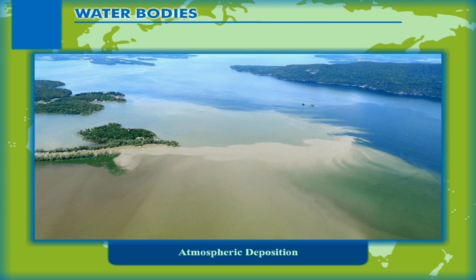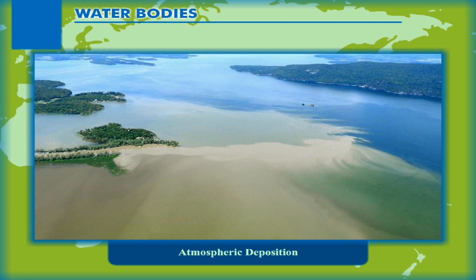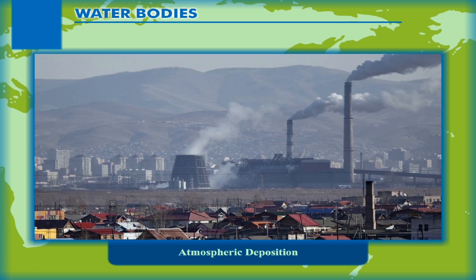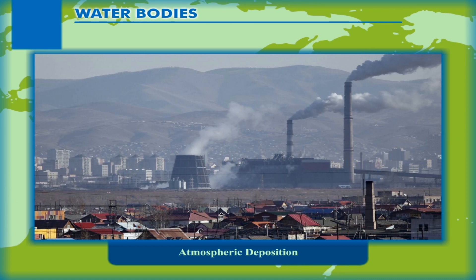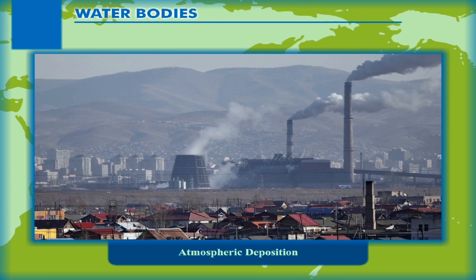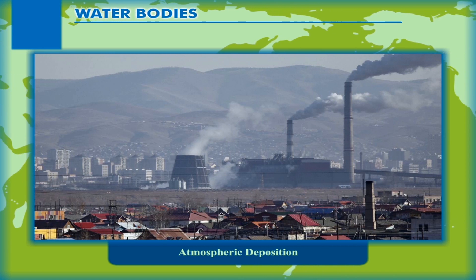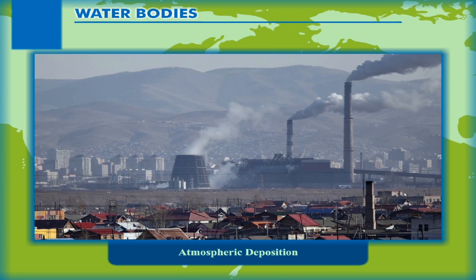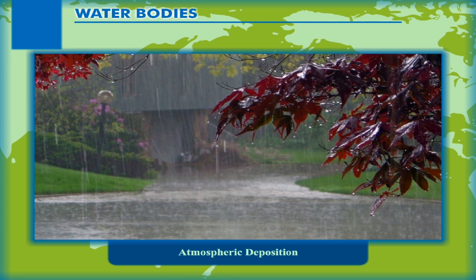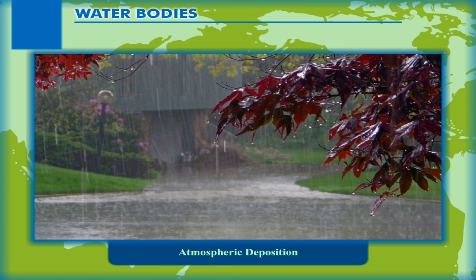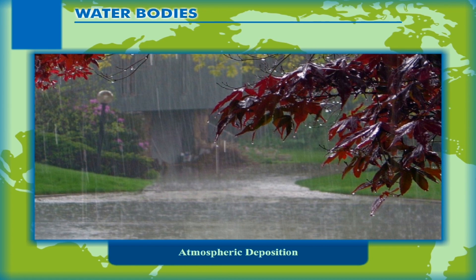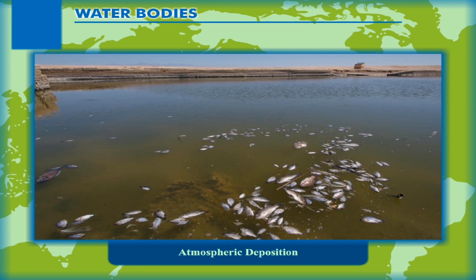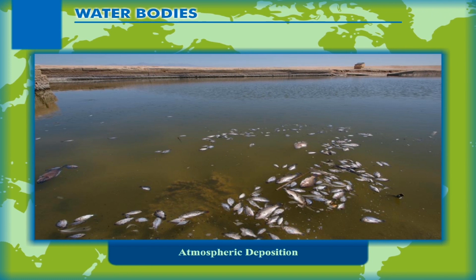Atmospheric Deposition: Atmospheric deposition is the pollution of water bodies caused by air pollution. Each time the air is polluted with sulfur dioxide and nitrogen oxide, they mix with water particles in the air and form a toxic substance. This falls as acid rain to the ground and gets washed into water bodies, causing water bodies to become contaminated, which affects animals and water organisms.